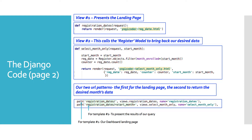We let the user dictate what the month will be. Then we have a counter passing in reg_date.count — the count method — so when the list comes back, that tells us how many enrollments we have for the given month. We also have the return render with the request, the template, and the context that passes in the three variables, which we'll use in Template Number Two.